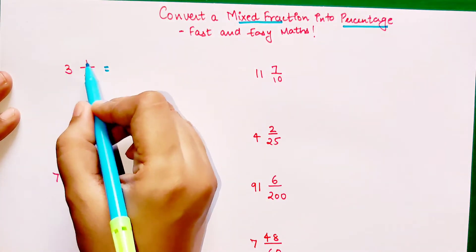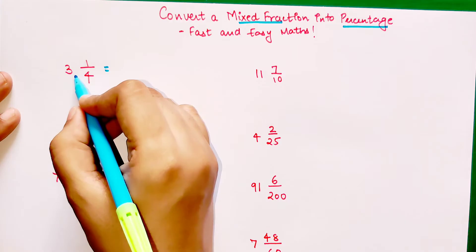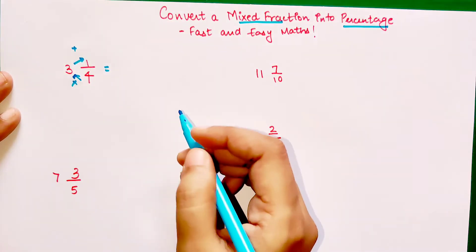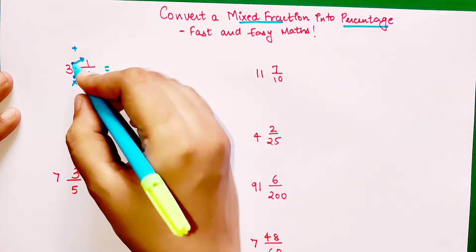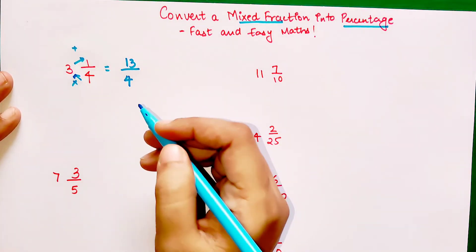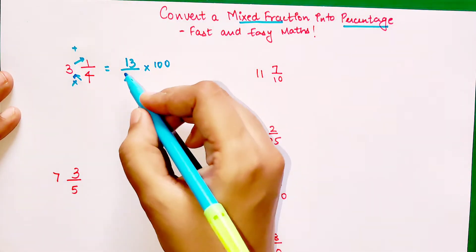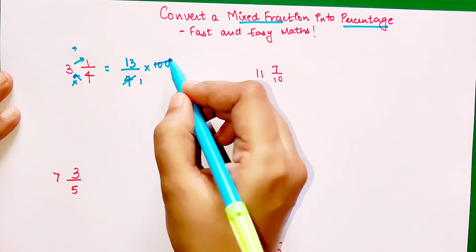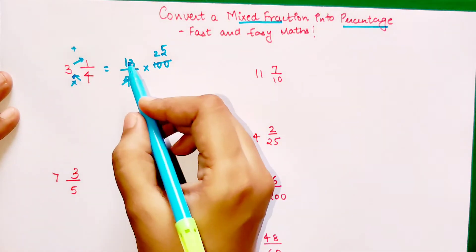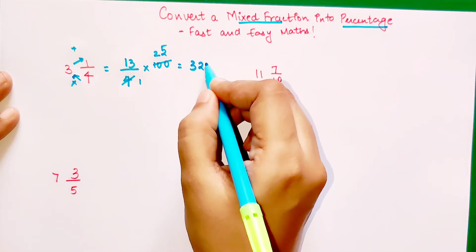Here we have 3 1/4. First you convert it into an improper fraction. You multiply these two and then add. So 3 into 4 is 12, 12 plus 1 is 13, 13 upon 4. When you want to convert anything into a percentage, multiply by 100. Here you cancel this out and get 25. When you multiply 25 by 13, your answer is 325 percent.